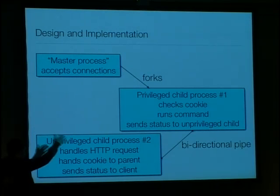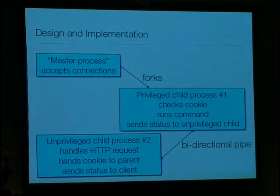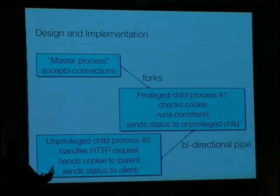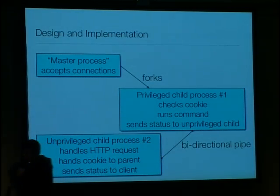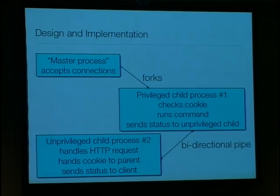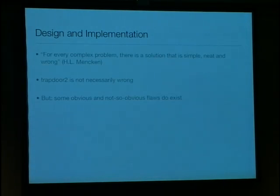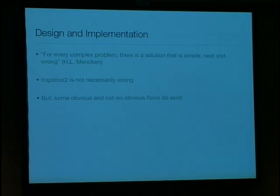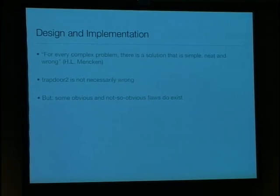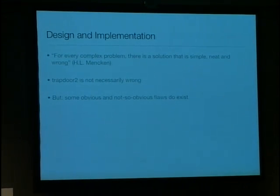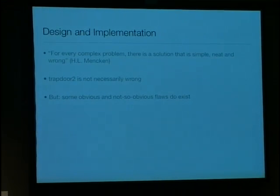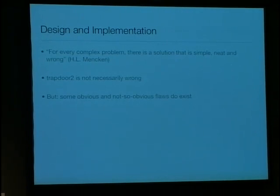We use this two-stage thing because you obviously cannot interact with the client — who is the potential attacker — with a root process, and you need root permissions to run the associated command. So it's really the naive approach. And of course, this famous quote: 'For every complex problem, there is a solution that is simple, neat, and wrong.' Trapdoor 2 is not really wrong, but when we looked at it closer after we wrote the first version, we found some obvious and not so obvious flaws, so we looked a bit further and implemented code to prevent certain attacks.